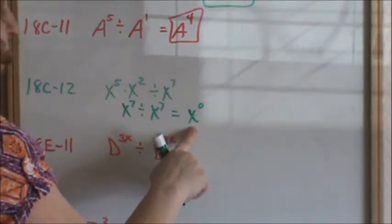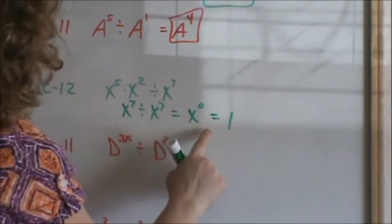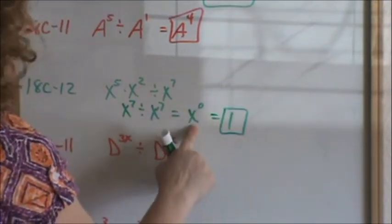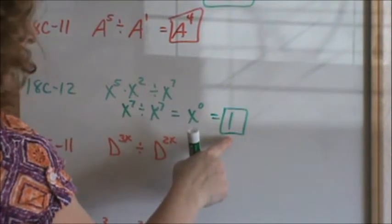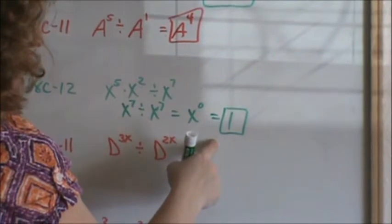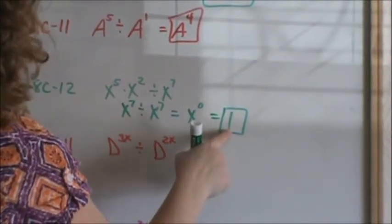As a reminder, anything to the 0 power equals 1. Not x to the 1, but just 1. x to the 0 equals 1. Anything to the 0 power. It doesn't matter if it's x to the 0, 7 to the 0, 10 to the 0, a million to the 0, anything to the 0 power equals 1.